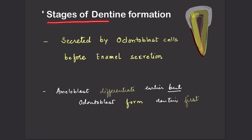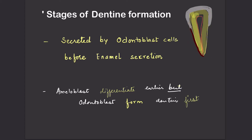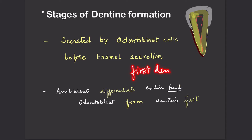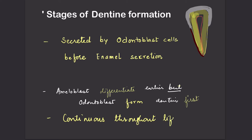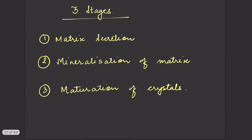We are continuing with the dentine tutorials, seeing stages of dentine formation. Dentine forms the bulk of the tooth and is secreted by the odontoblast cells present in the pulp. The ameloblasts differentiate earlier, but odontoblasts form dentine first, making dentine the first dental hard tissue to form. This dentine formation continues throughout the life of the tooth.